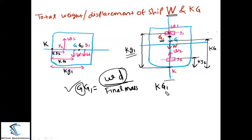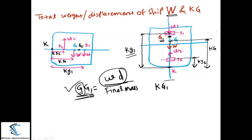Now I want to find KG1 — the new center of gravity location from the keel. I am going to take the moment about the keel. In the earlier bar example, we took the moment about the fulcrum, which was at the center of gravity. So when taking the moment about G, the result is measured from G, giving GG1. It depends on which point you take the moment about.